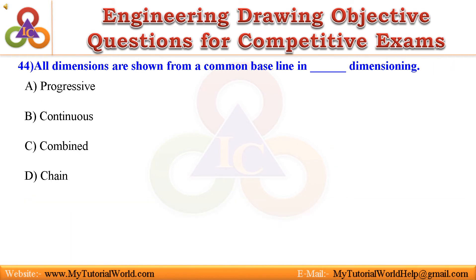44. All dimensions are shown from a common baseline — this is called underscore dimensioning. A. Progressive, B. Continuous, C. Combined, D. Chain. Answer is Progressive.